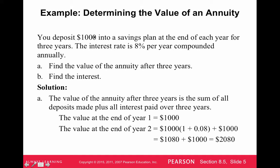Let's say you're going to deposit $1,000 into a savings plan at the end of each year for three years. The interest rate is 8% per year compounded annually. Find the value of the annuity after three years and find the interest. We're not going to use a formula here — we're just going to break this down to understand what's happening. At the end of one year, we make a $1,000 investment, so the value at the end of one year is $1,000.